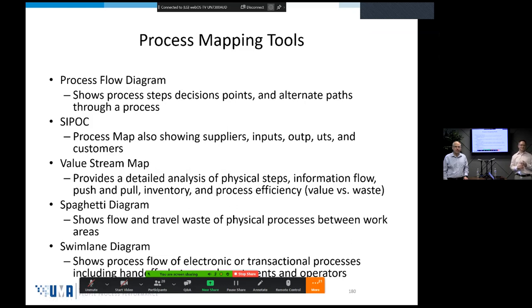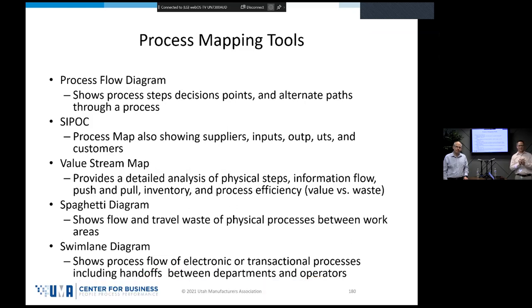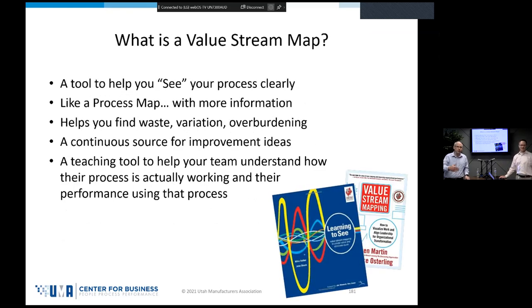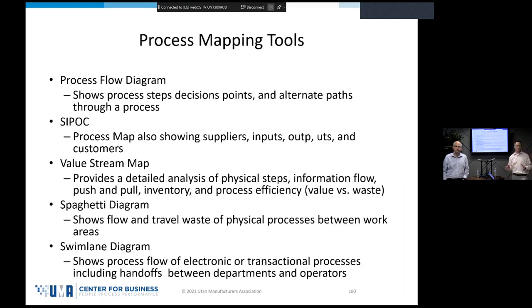A couple of process mapping tools: we're going to learn process flow diagrams, sidebox diagrams, value stream maps, spaghetti diagrams, and swimming lane diagrams — all different variants of how to map out a process from start to finish. The value stream map we're teaching today is a very simplified version of a traditional value stream map — it's the one Ryan and I use 99% of the time. We've never been to a client without doing this. It is probably the most effective tool in our problem-solving process.